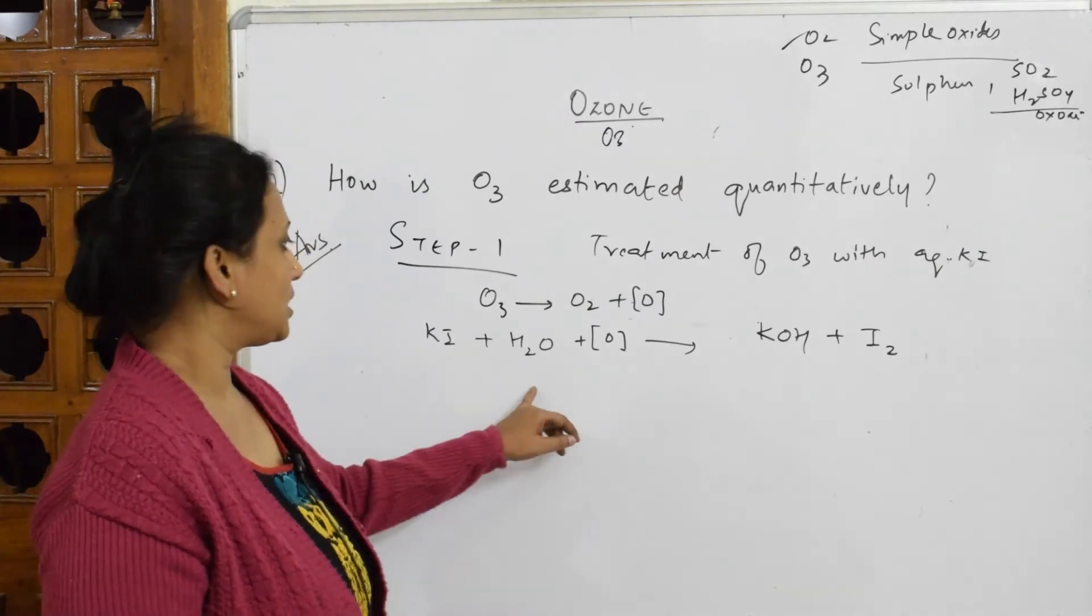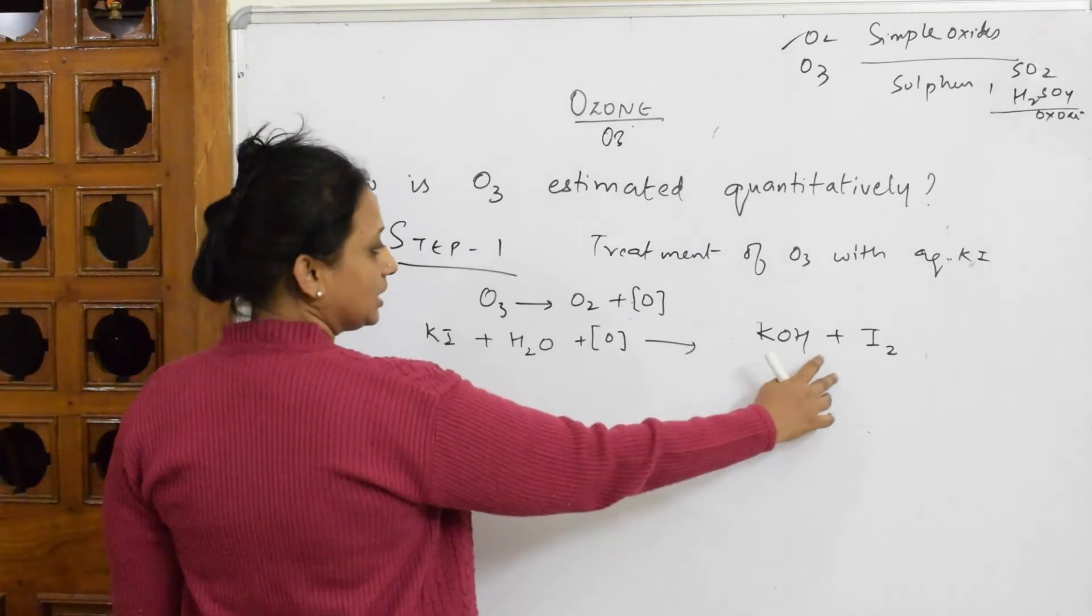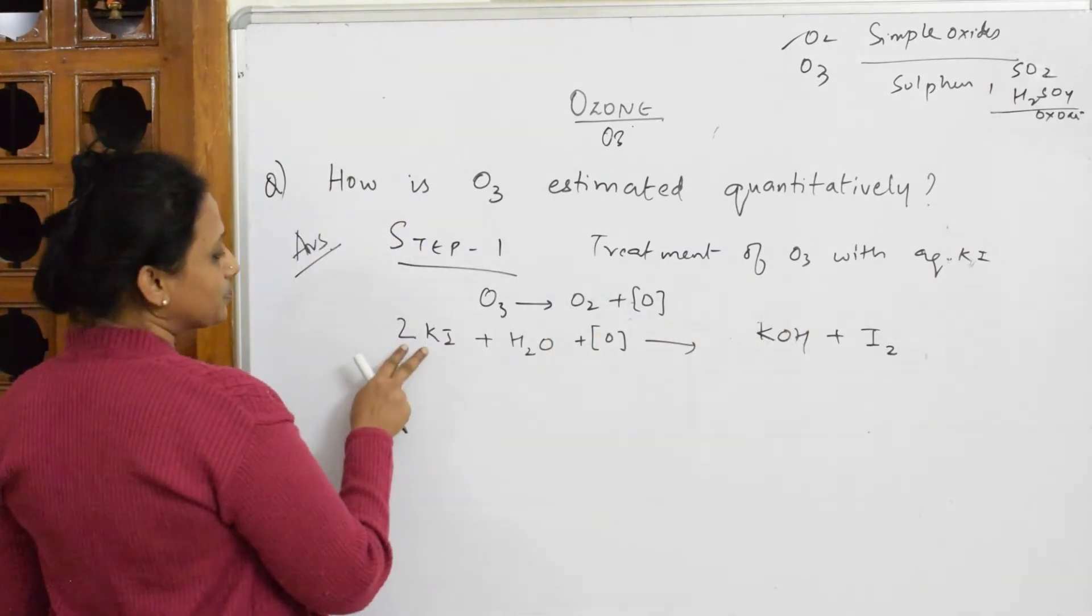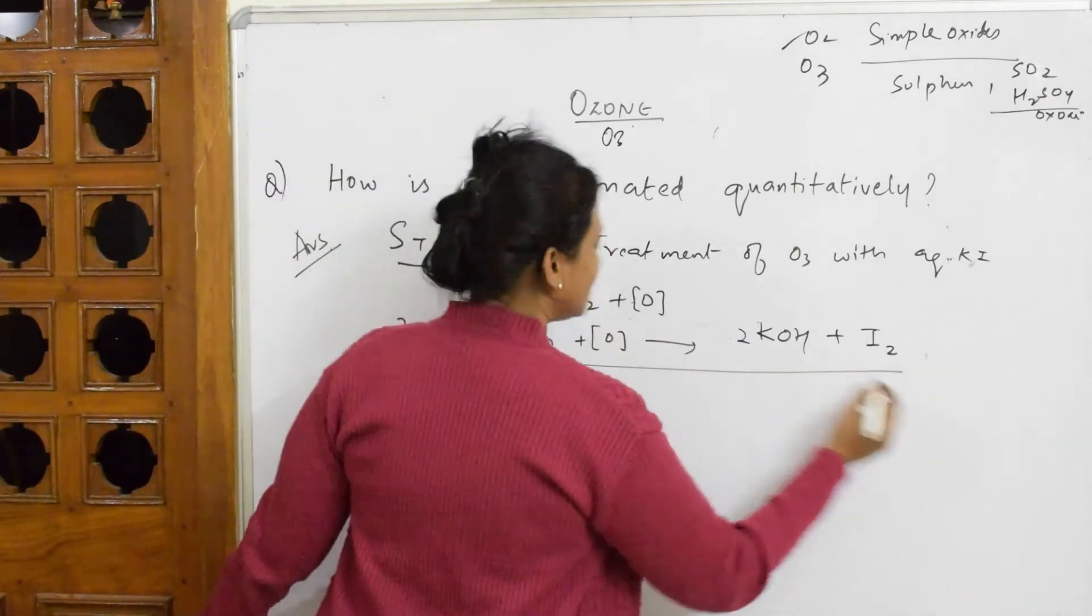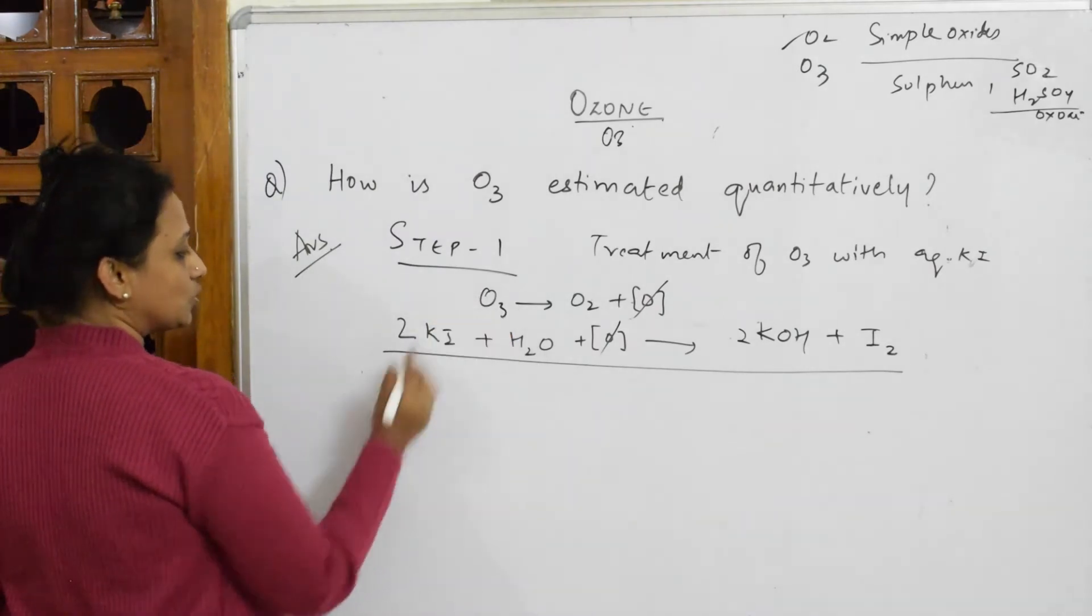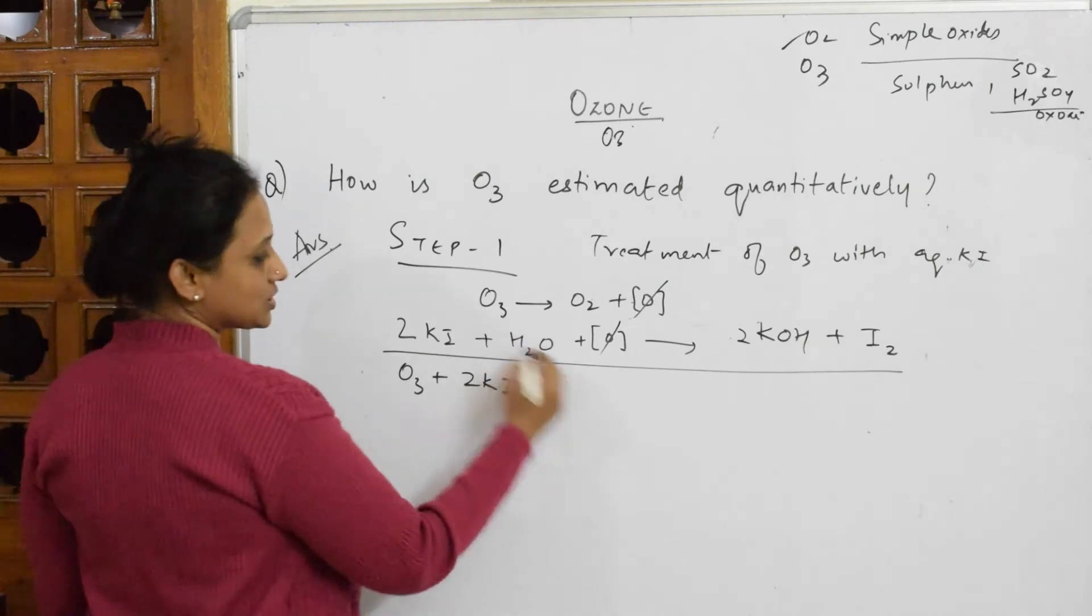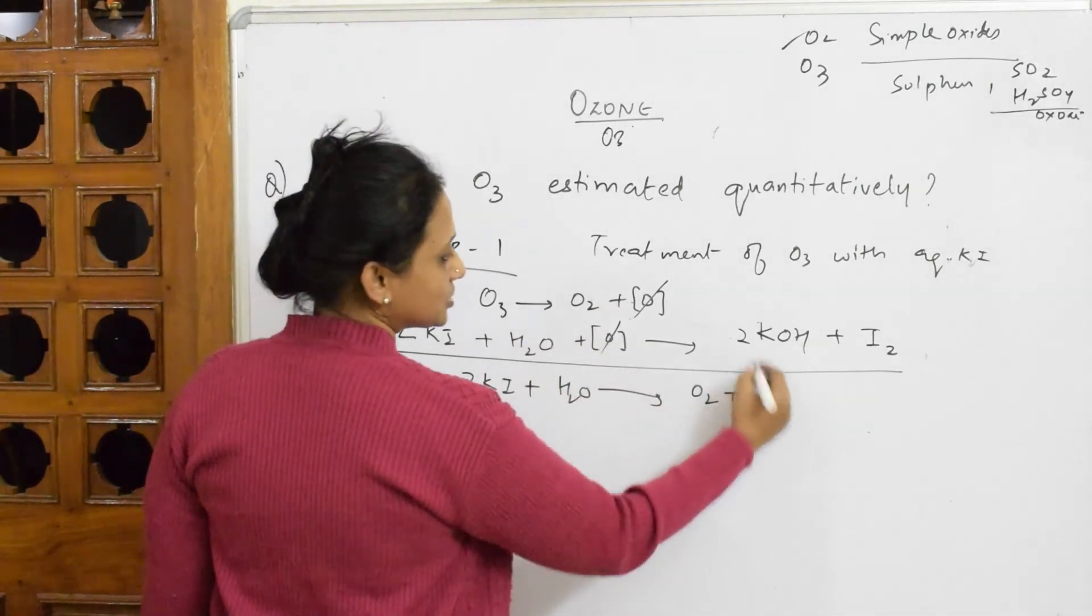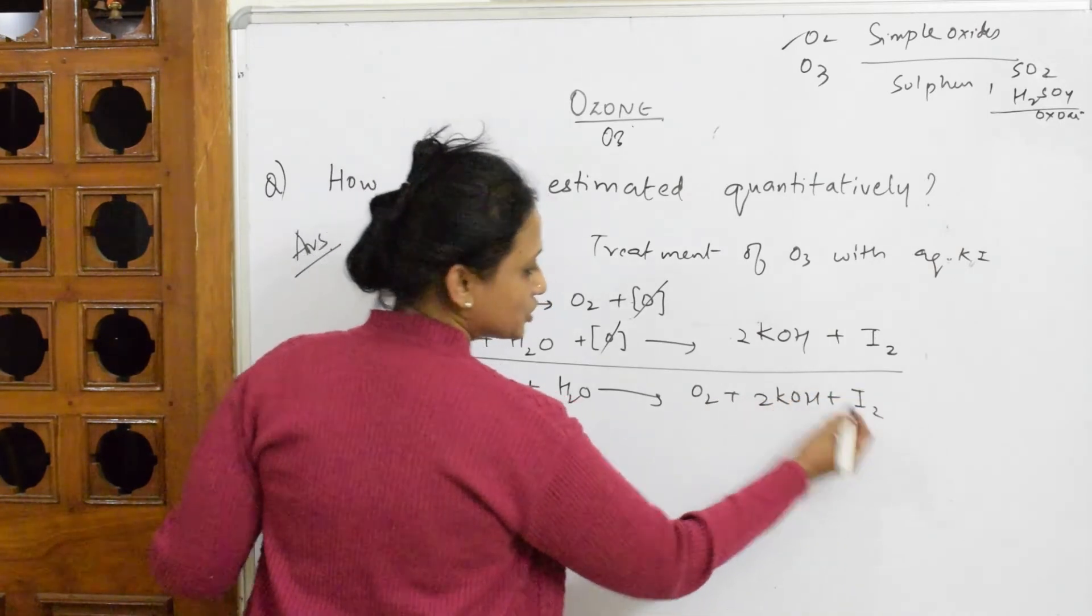Now iodine is how much? Two, isn't it? So I'm going to write two here. Potassium is two, so I'm going to write two. Now let us come back and cancel the reaction. This O and this O gets cancelled. So what is the final reaction? O₃ plus 2KI plus water gives me oxygen here, plus your 2KOH plus iodine.